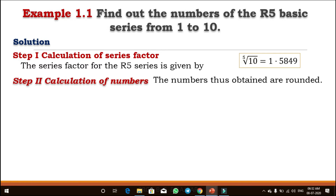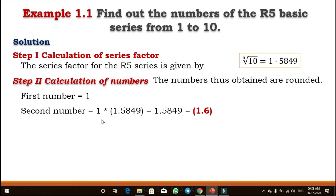Now, calculations of the numbers. One thing to note: when we start multiplying with the series factor, whatever number we get, sometimes we just round it off. Since the range is 1 to 10, the first number we take is 1. For the second number, we multiply the first number by the series factor, so the second number is 1 × 1.5849, and rounding off we get approximately 1.6.